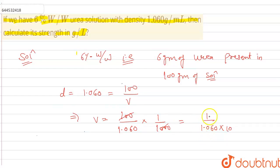So this is the value of volume in liter. We have to find strength in gram per liter, and gram is 6 gram.